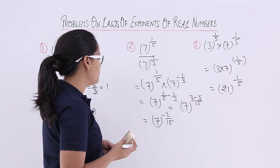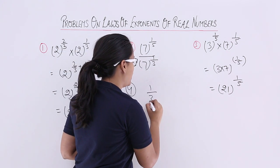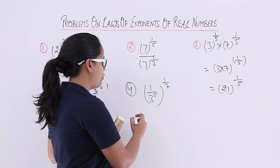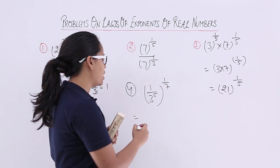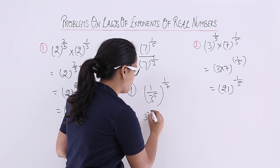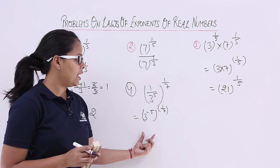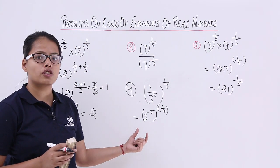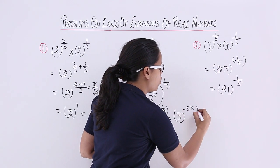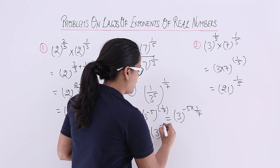Now let's take example number 4: 1 by 3 raised to power 5, whole raised to power 1 by 7. First, you bring the denominator value into the numerator — the sign of the exponent, which is positive 5, gets inverted to negative 5, and the outer power is 1 by 7. This expression now exactly looks like the third law of exponents, in which the powers get multiplied. So the final result is negative 5 into 1 by 7, which equals minus 5 by 7.